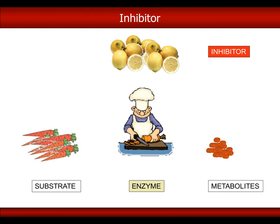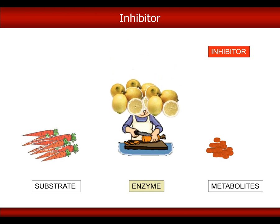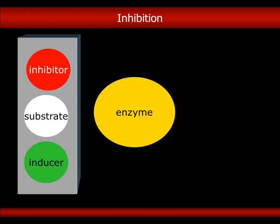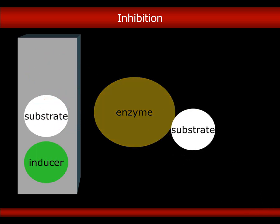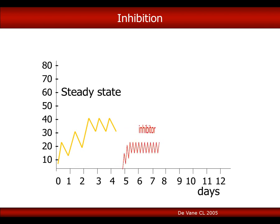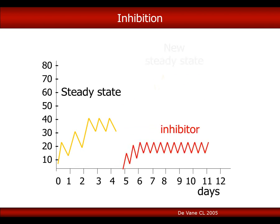Now we see what happens if we add an enzyme inhibitor to our substrate — for example, grapefruit juice, a famous inhibitor. Our cook will be blocked; carrots, our substrate, will not be elaborated and accumulate, while the slices, our metabolites, decrease. Therefore, an inhibitor binds to the enzyme, transforms it, and makes it unavailable for processing substrates. In the presence of an inhibitor, the substrate steady state will rise rapidly.